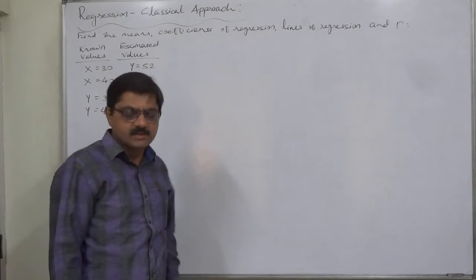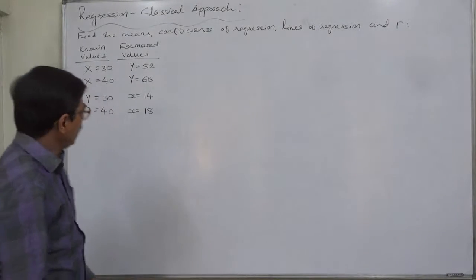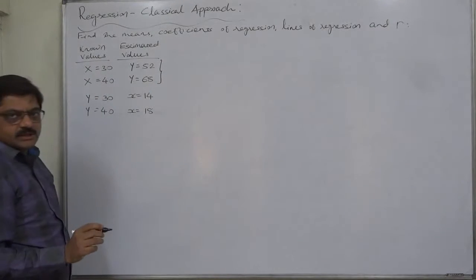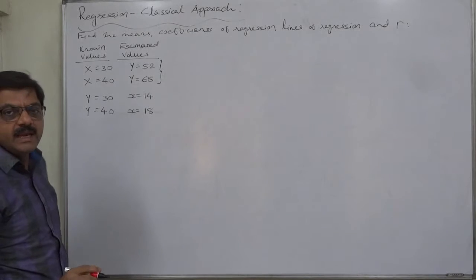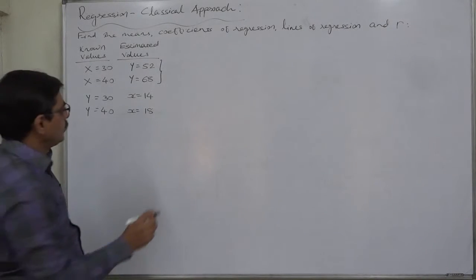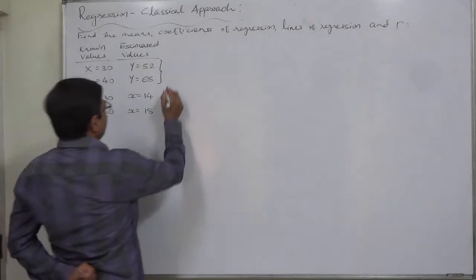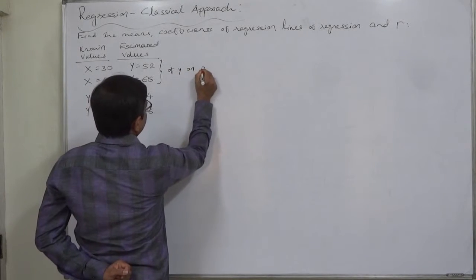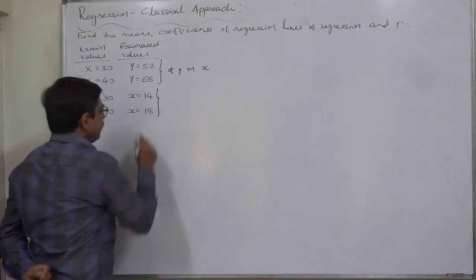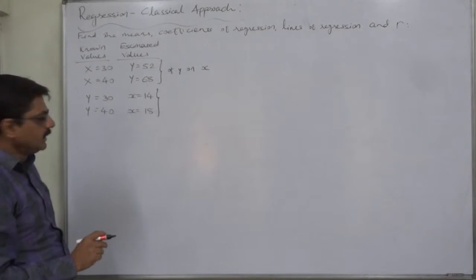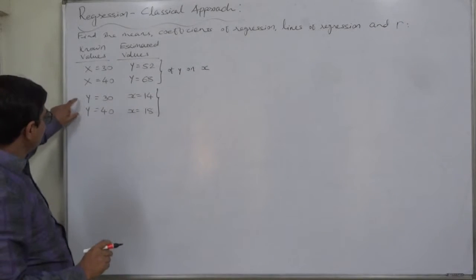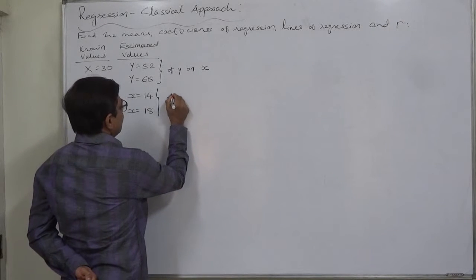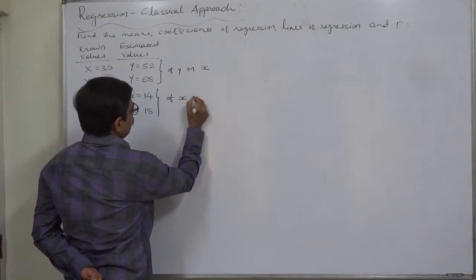The estimated values of y on the basis of known values of x can be found from the line of regression of y on x, and the estimated values of x can be found on the basis of the known values of y from the line of regression of x on y.